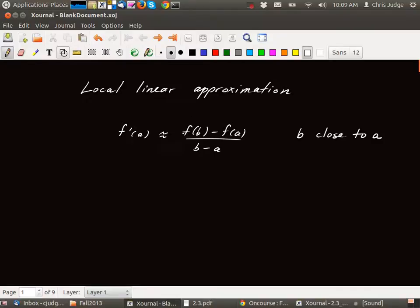So what we're going to do first is solve for f of b to get the linear approximation formula. To do that, let's multiply both sides of this estimation by b minus a.